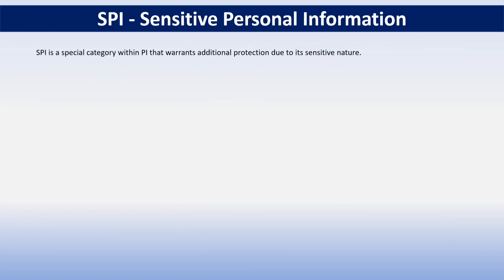The next category is sensitive personal information, or SPI. It is a special category within personal information that warrants additional protection due to its sensitive nature. Because SPI is also PI, all SPI can be considered as PI, but not all PI can be SPI.